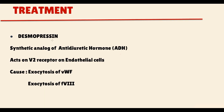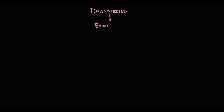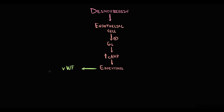The treatment of von Willebrand disease is desmopressin, a synthetic analog of antidiuretic hormone. The mechanism is that desmopressin acts on vasopressin V2 receptors on endothelial cells, causing an increase in cyclic AMP, which induces exocytosis from endothelial cells. First of all, it causes exocytosis of von Willebrand factor from Weibel-Palade bodies, thereby correcting the level of von Willebrand factor in the blood.